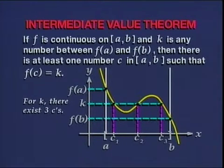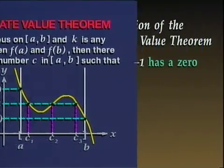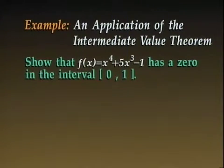The intermediate value theorem can be used to show that a continuous function on a closed interval has a zero in the interval. For example, we'll show that the polynomial function F(x) = x^4 + 5x^3 - 1 has a zero in the closed interval from 0 to 1.